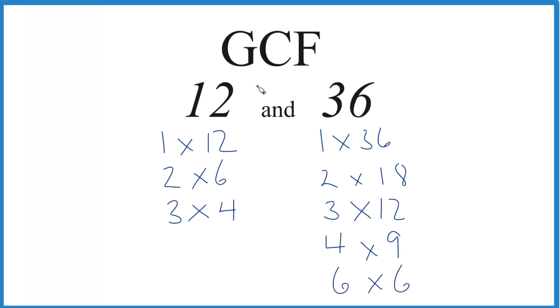Now when we compare the lists, we can see that 1, that's a common factor to 12 and 36, 2, 3, 4, 6, but the greatest common factor is going to be 12.